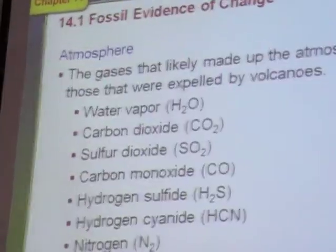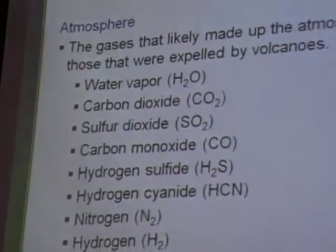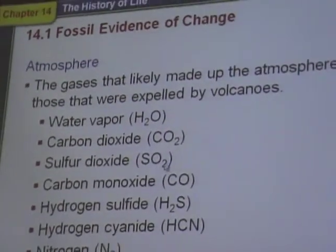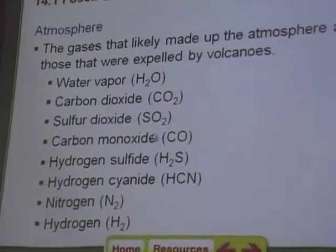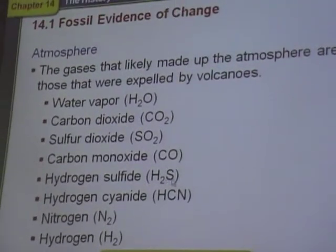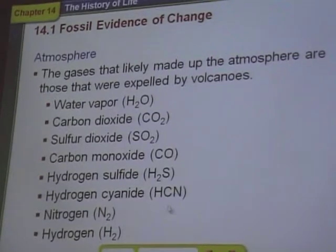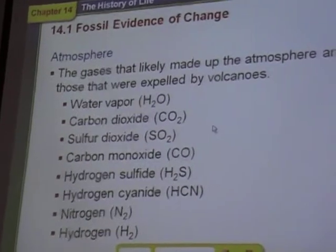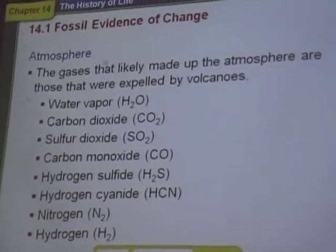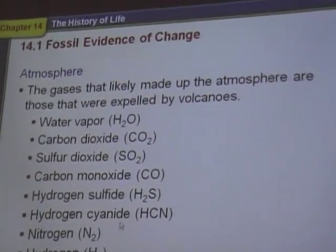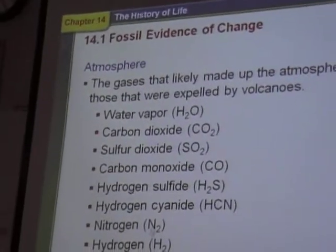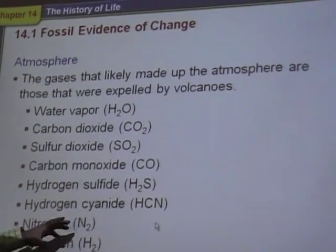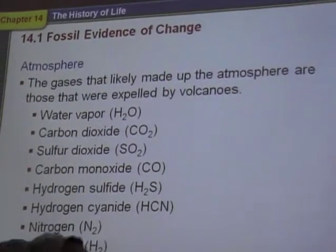Here's what we know was in the atmosphere 4 billion years ago when the Earth formed: water vapor, carbon dioxide, a lot of sulfur dioxide — this is what volcanoes built up — carbon monoxide, hydrogen sulfide, hydrogen cyanide (that's a poison), nitrogen, and hydrogen. There was no free oxygen O2. These are the same types of gases that are thrown up by volcanoes even today.